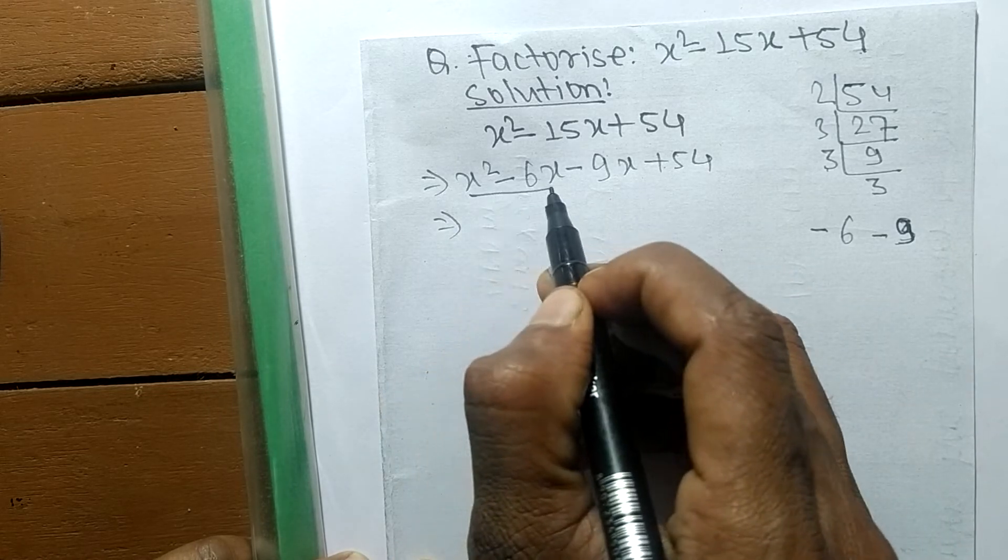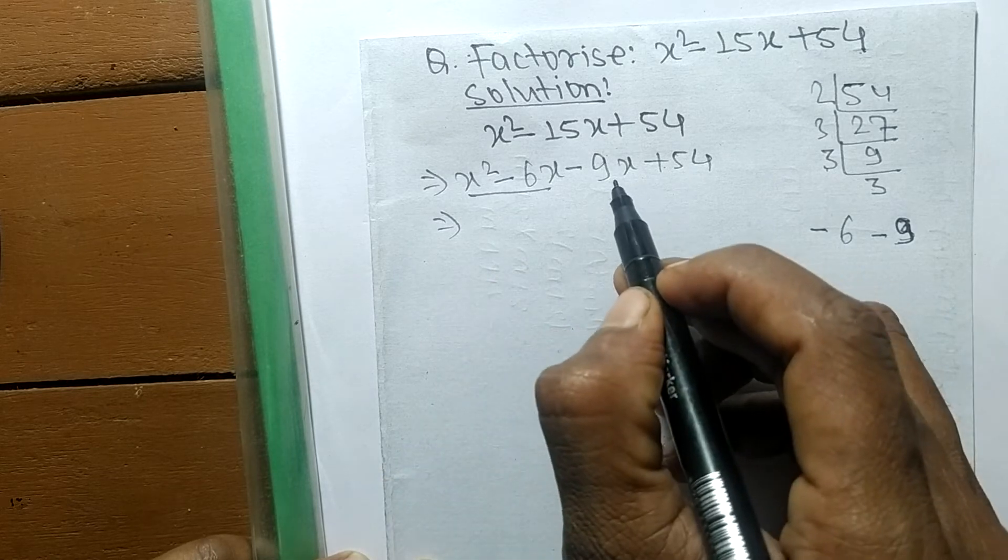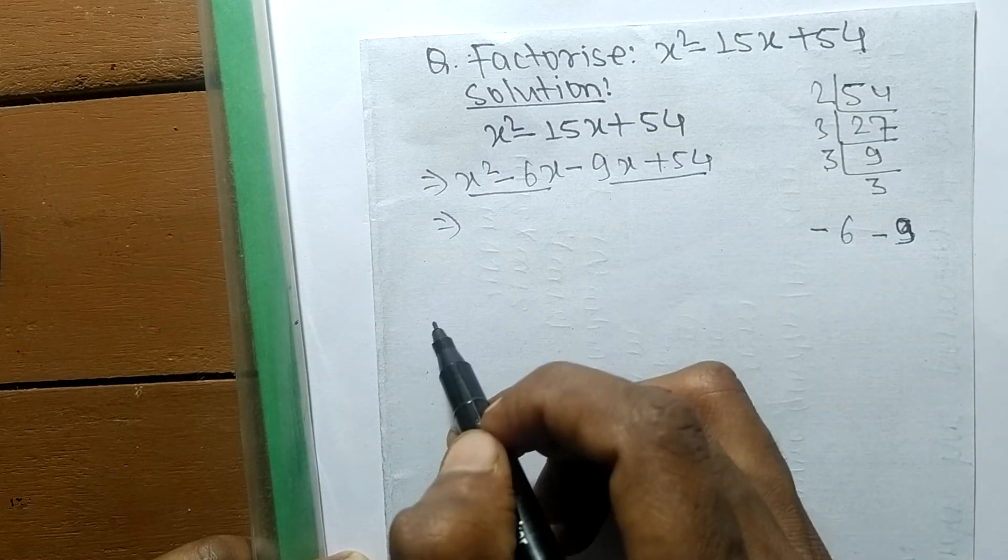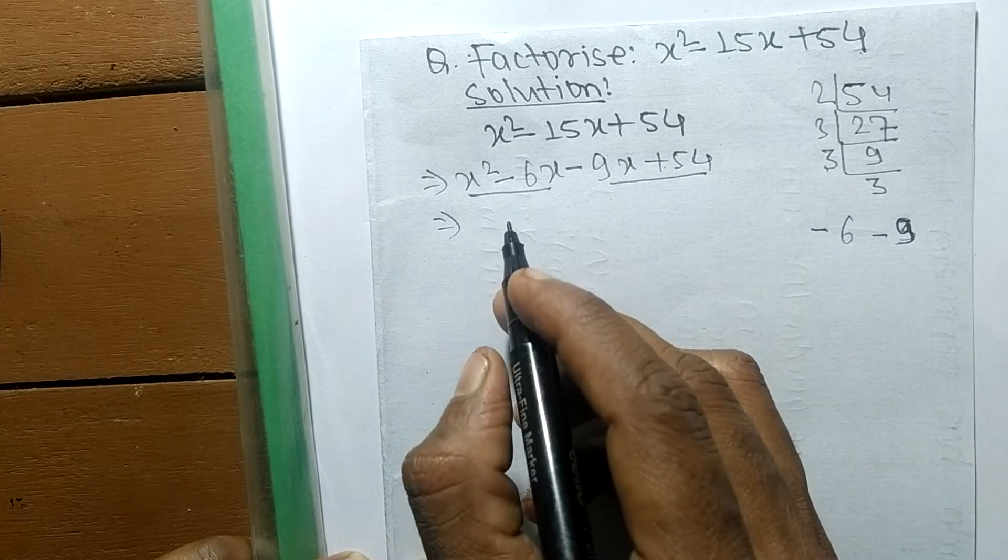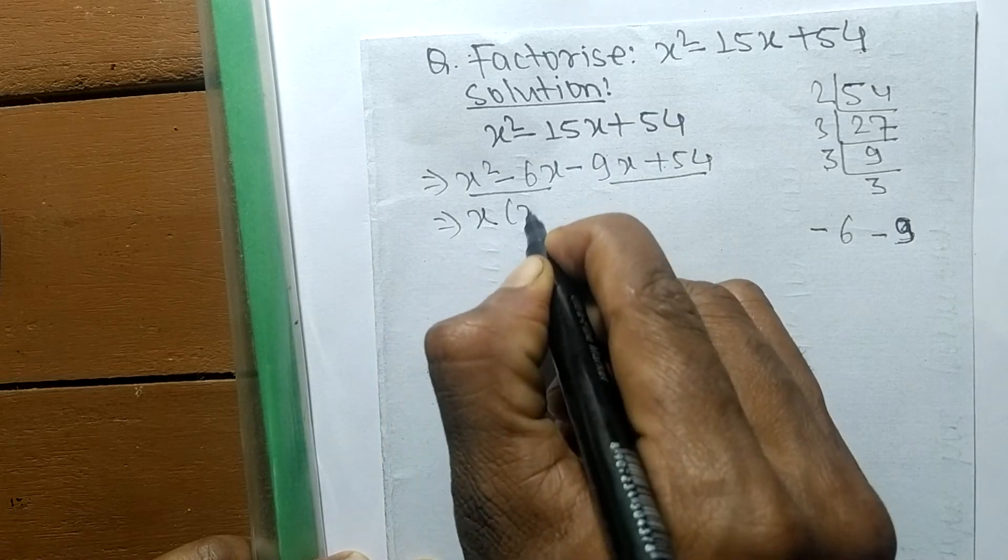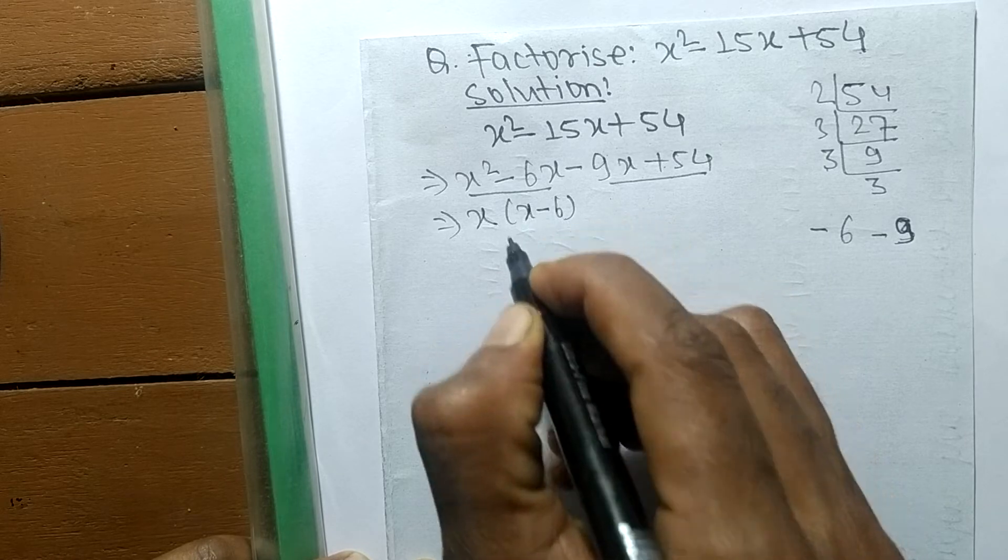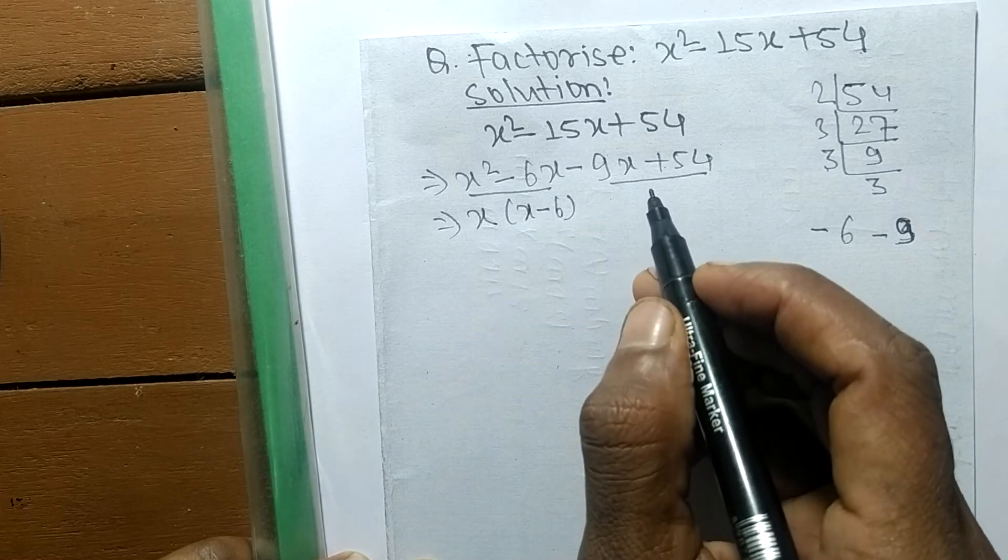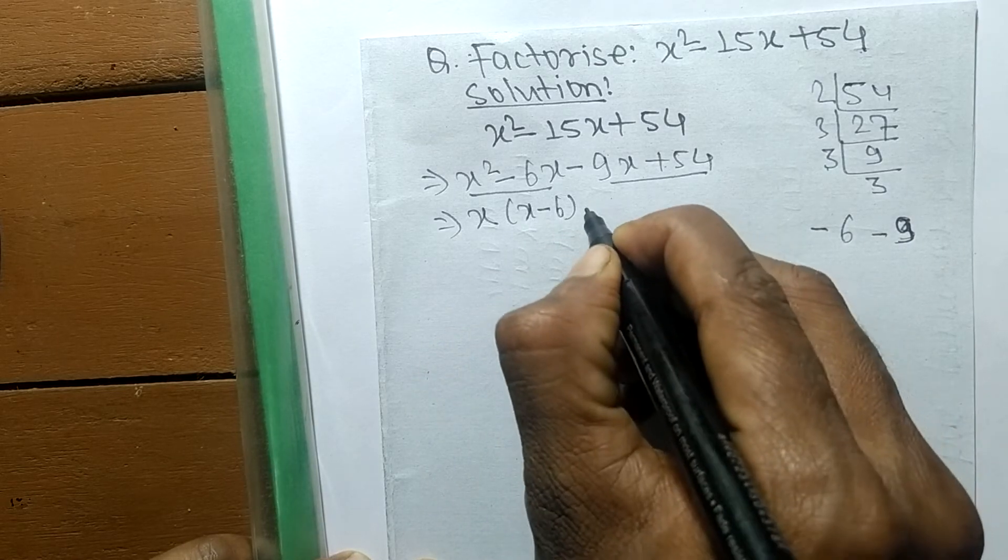These both are the first pair, and these both are the second pair. So in the first pair, the common here is x, so the remaining is x - 6. In the second pair, the common here is minus 9, so the remaining is x - 6.